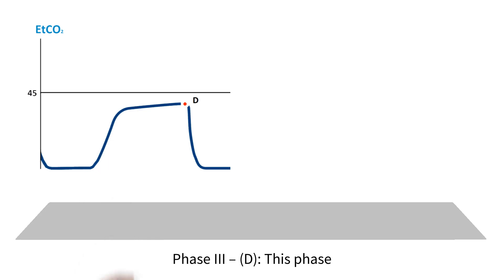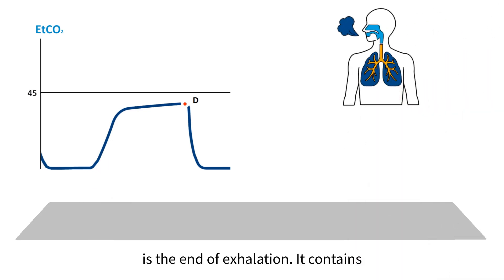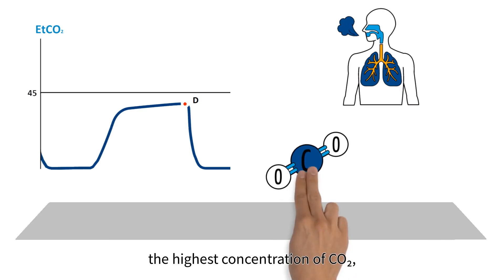Phase three D is the end of exhalation. It contains the highest concentration of carbon dioxide, which is labeled the end-tidal carbon dioxide.